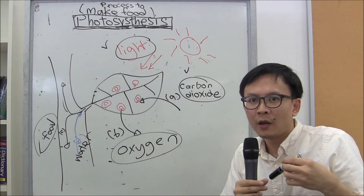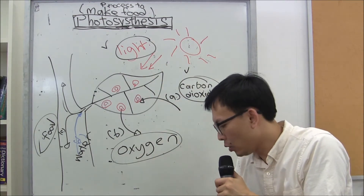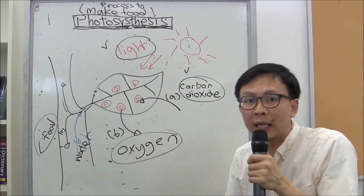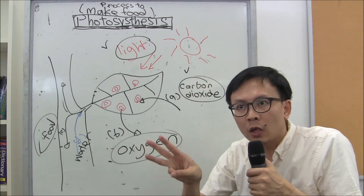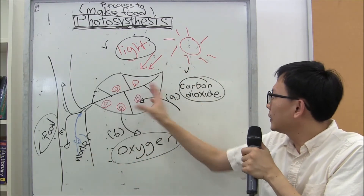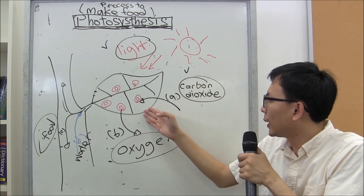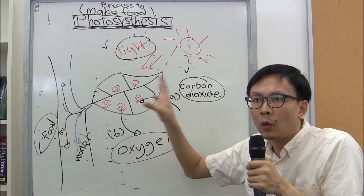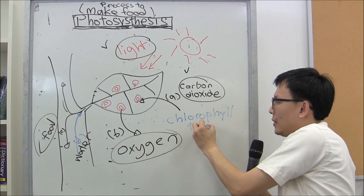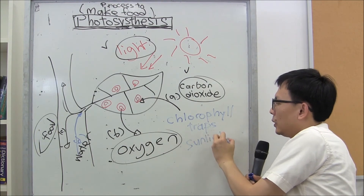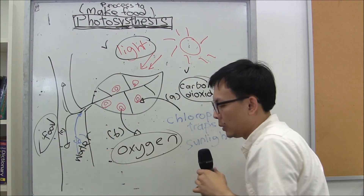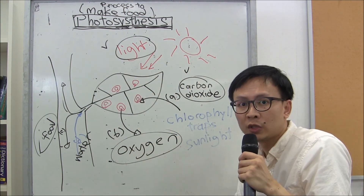Did you get the correct answers? So this is the process of photosynthesis. That's all for today. If you have any questions, you can ask me when we meet in class. Three conditions required for photosynthesis to occur: light, carbon dioxide, and water. The plants take in carbon dioxide through the stomata and water, and with the presence of light — which chlorophyll helps to trap — please do not forget how to spell chlorophyll: C-H-L-O-R-O-P-H-Y-L-L — photosynthesis occurs and produces oxygen and food, which is also called sugar. That's all for this simple illustration of photosynthesis. Thank you, everybody.